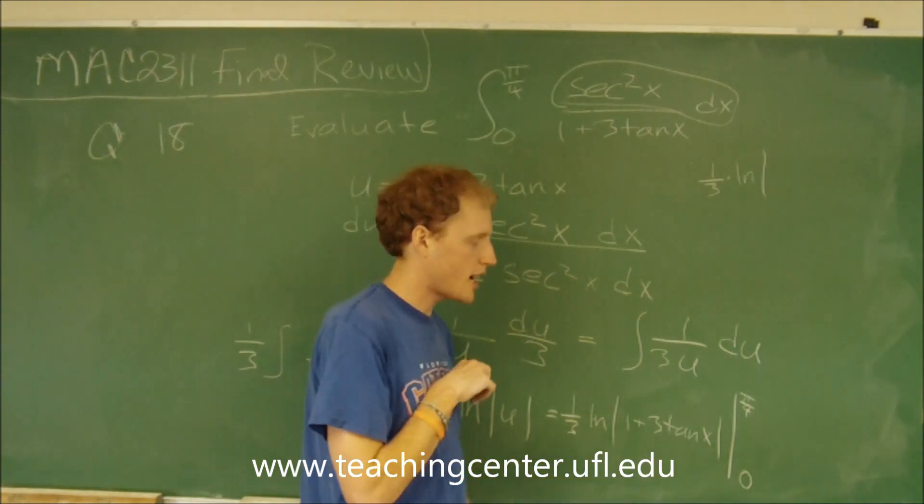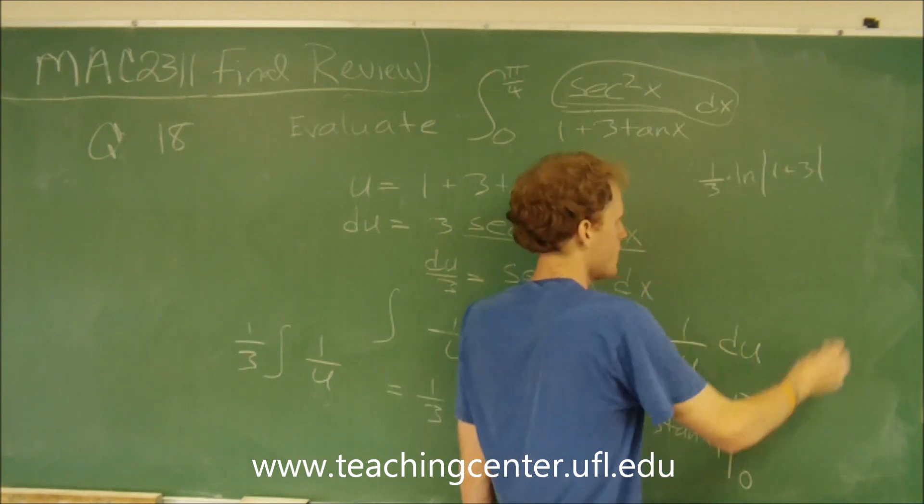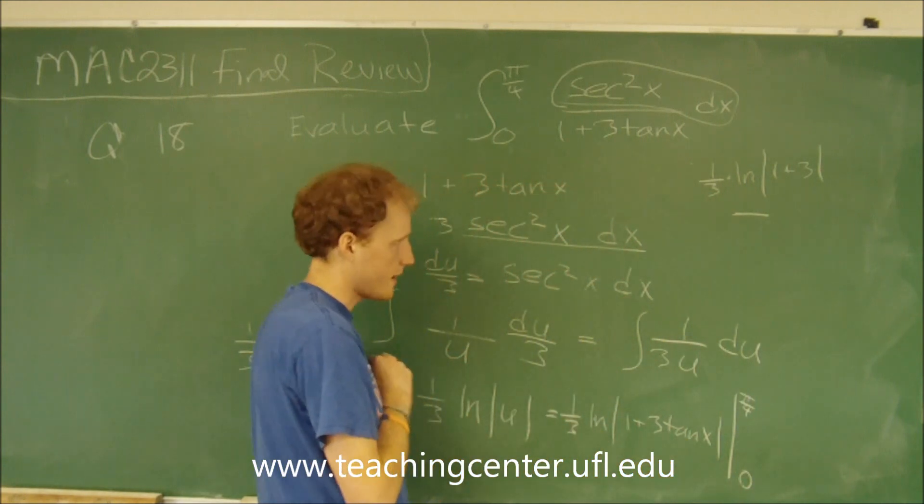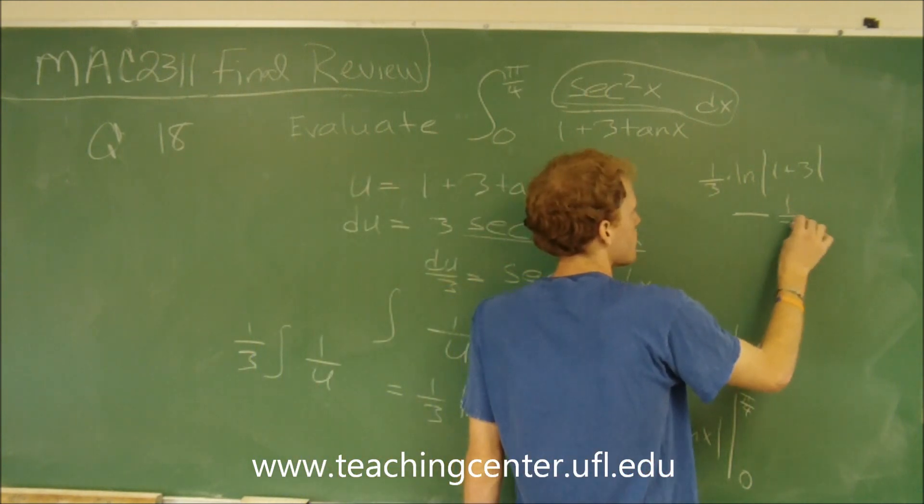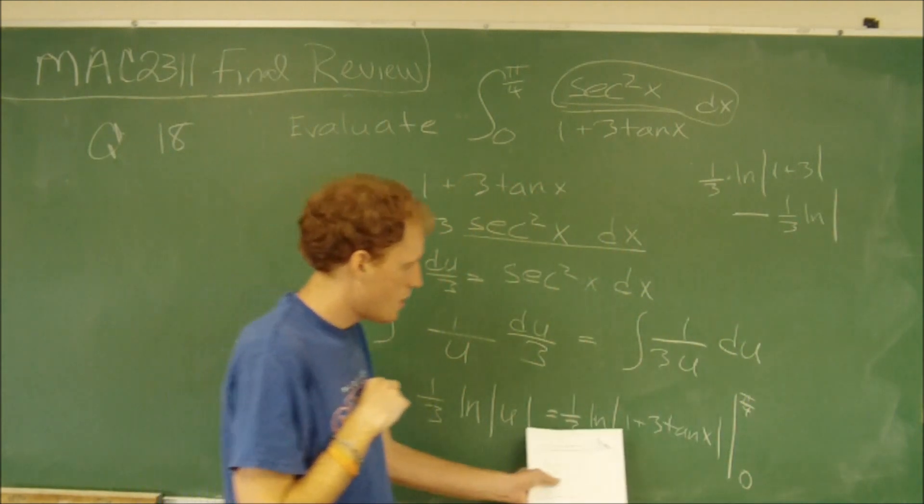So tangent of pi over 4 is 1. So it's 1 plus 3. Then we subtract when we plug in our lower bound. So it's minus 1 third times the natural log of the absolute value of 1.